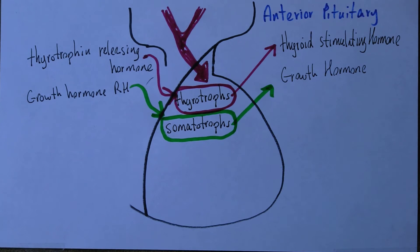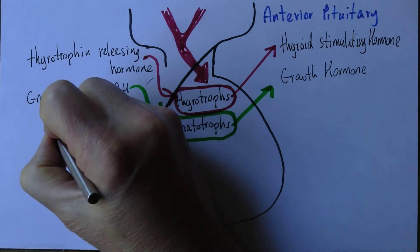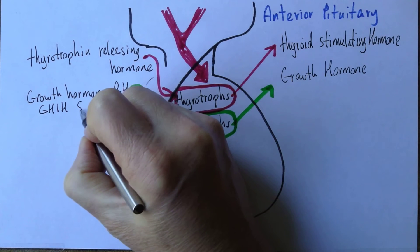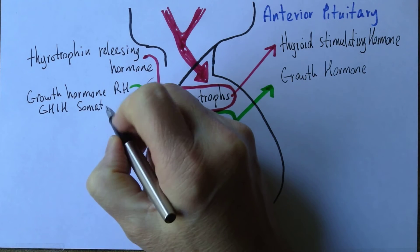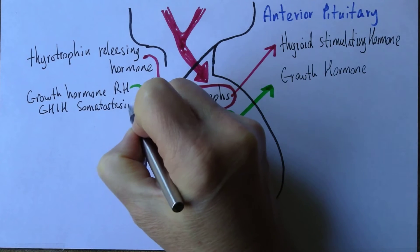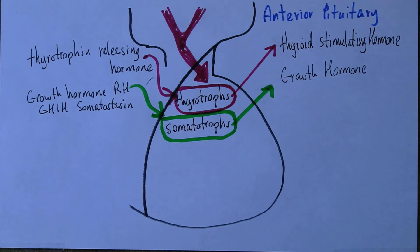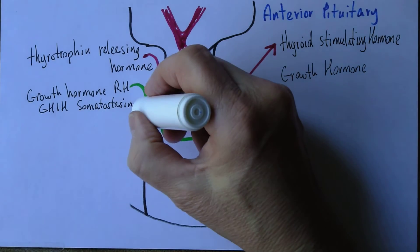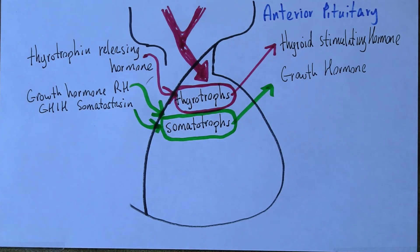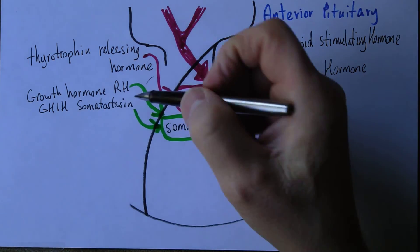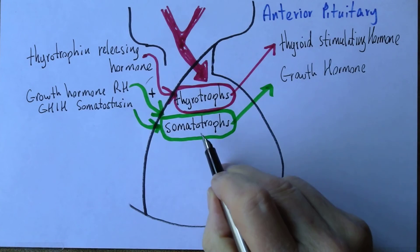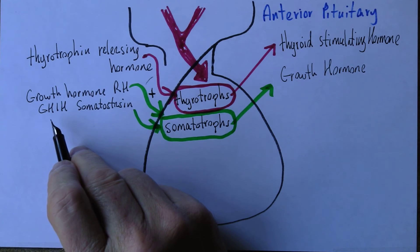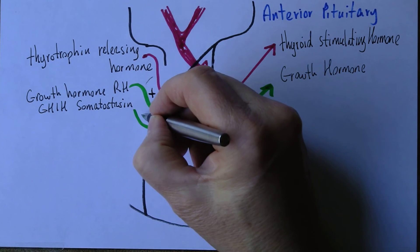There is also a growth hormone-inhibiting hormone — that's somatostatin — which affects the somatotrophs in a negative way, inhibiting them. So the more growth hormone-releasing hormone has a positive effect, increasing the release of growth hormone from the somatotrophs, while somatostatin has a negative, inhibitory effect.